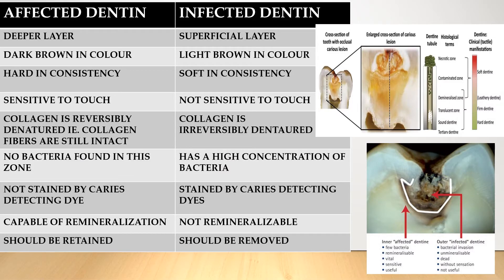These differences are the most commonly asked short answer question, so you must know them well. The first difference: affected dentine is the deeper layer of carious dentine. Here you can see the enamel (white portion) and the dentine (yellow portion). The enamel is affected by the carious lesion first, then the dentine. The uppermost layer of carious dentine is infected dentine — it is the superficial layer. Beneath it is the deeper layer, which is affected dentine.